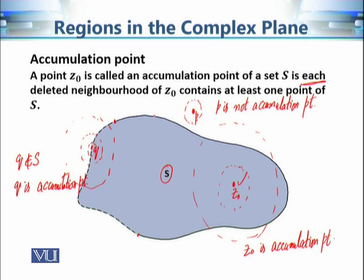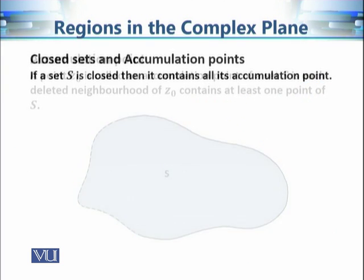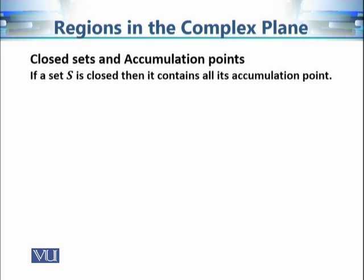Similarly, every point at the boundary is an accumulation point. The relationship between accumulation points and closed sets is: if a set is closed, then it contains all its accumulation points. We will use this condition to check whether a set is closed or not.